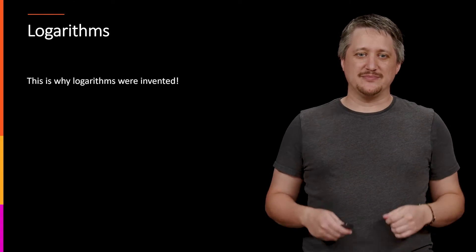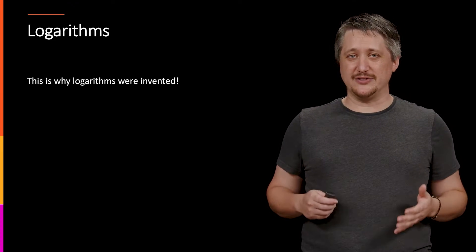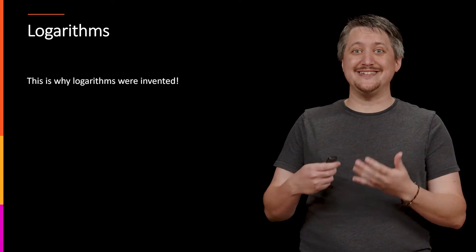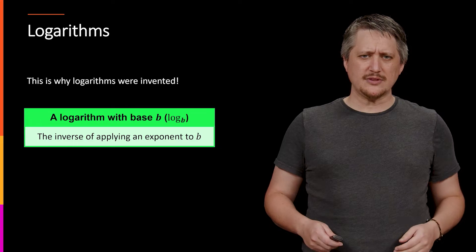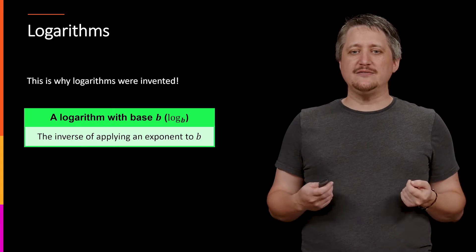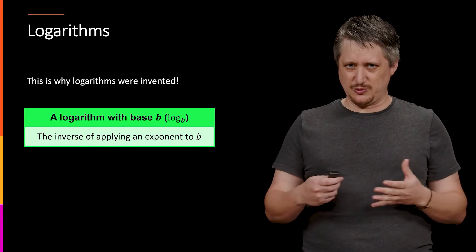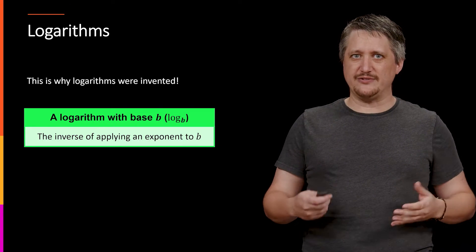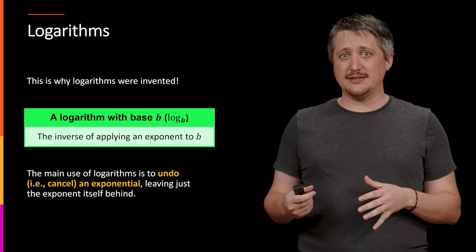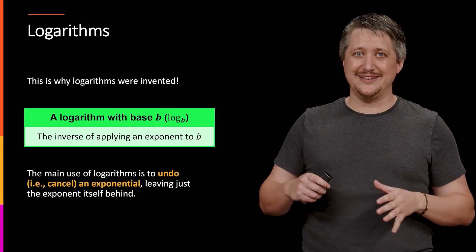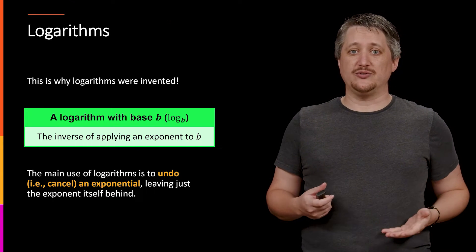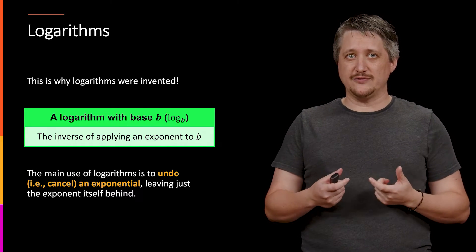So enter the logarithm. The logarithm was literally invented for this reason, to undo these exponential situations and get some representation that tells you what that number should be. A logarithm with base b, written as log base b, is the inverse of applying an exponent to b. The main use of logarithms at this level is to undo an exponential, trying to get just the exponent itself left behind.